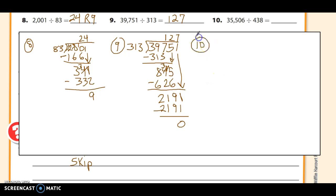Number 10. 35,506 divided by 438. 438 doesn't go into 3 or 35 or even 355, but it does go into 3,550. How many times? If I rounded this to 400, how many times would 400 go into 3,550? Maybe about 9. 9 times 4 would be 36, and then it's probably going to be 8. It's definitely going to be 8. 438 times 8. 8 times 8 is 64. 8 times 3 is 24, plus 6 is 30. 8 times 4 is 32, plus 3 is 35. So 3504, that's less than 3550. So I put an 8 here.